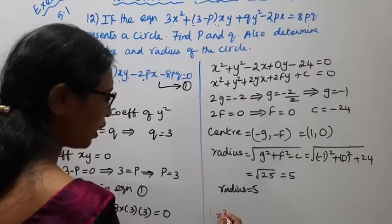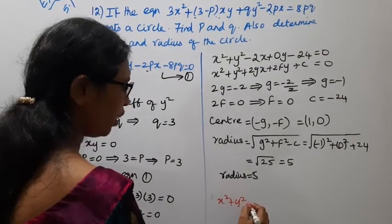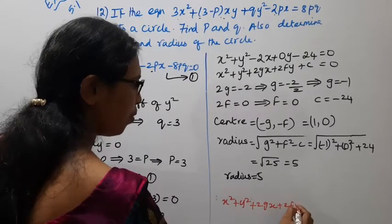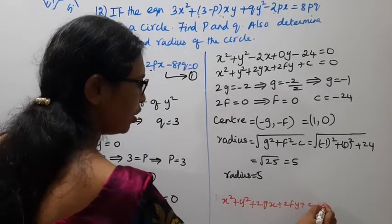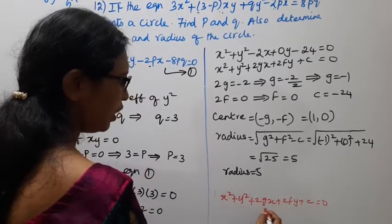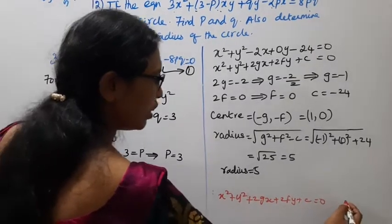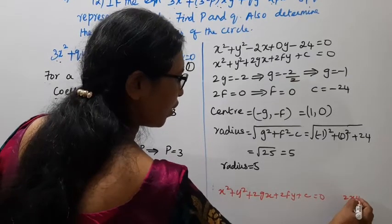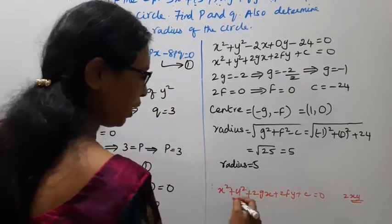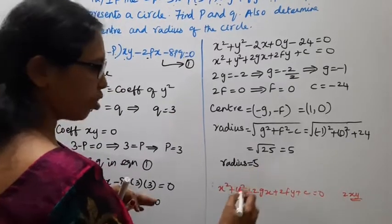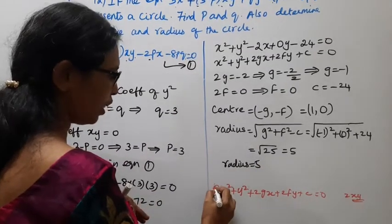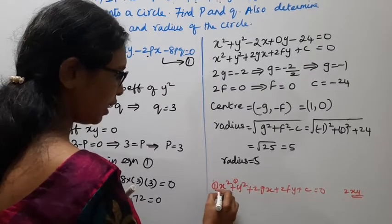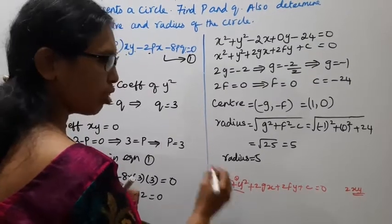This is the equation of a circle in general form: x² + y² + 2gx + 2fy + c = 0. The coefficient of x² is 1 and the coefficient of y² is 1. That's the equation of a circle.